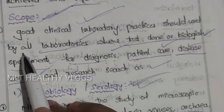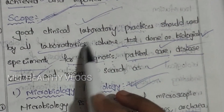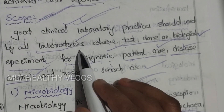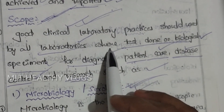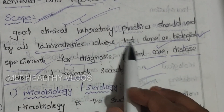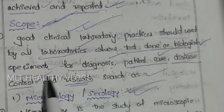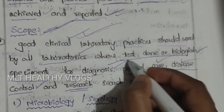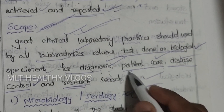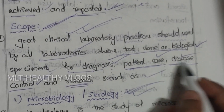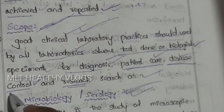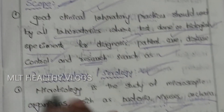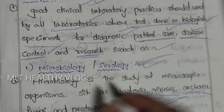Scope: Good Clinical Laboratory Practices should be used by all laboratories where tests are done on biological specimens for diagnosis, patient care, disease control, and research. Different types of laboratories where GCLP is used.